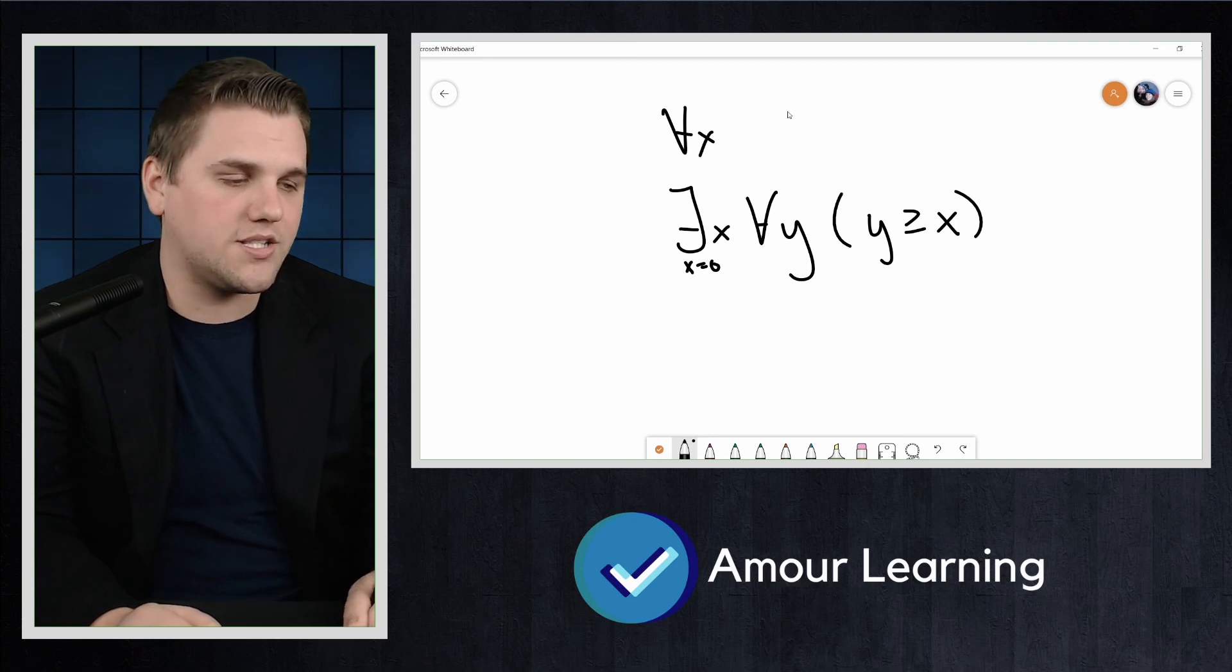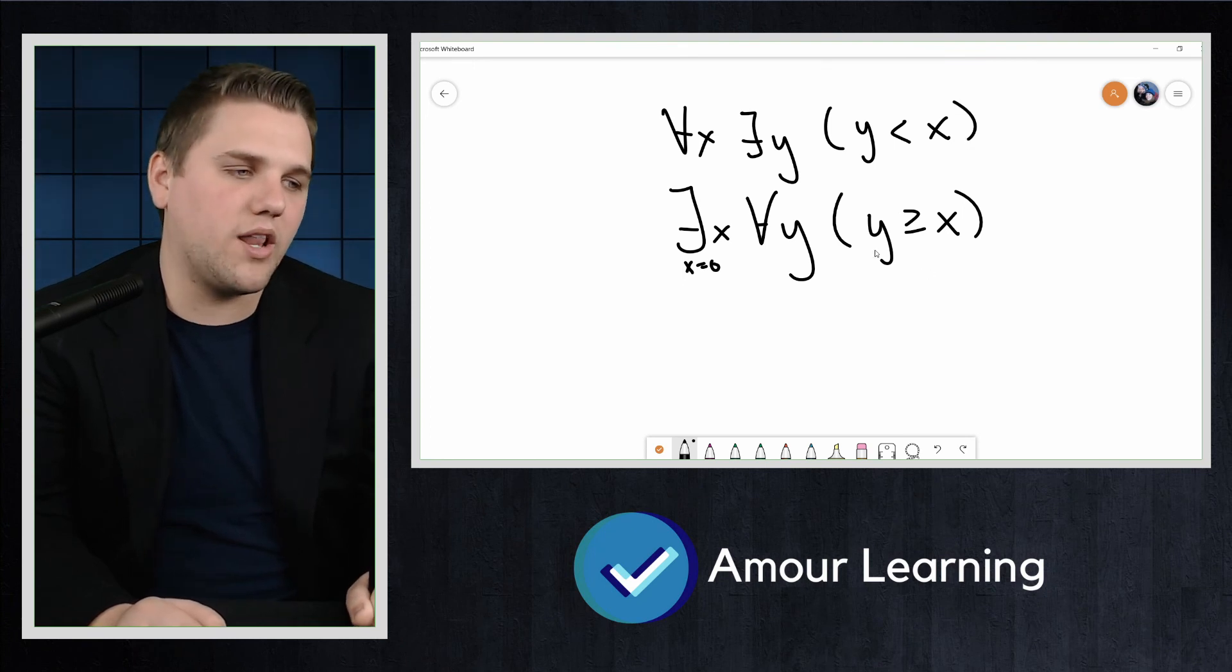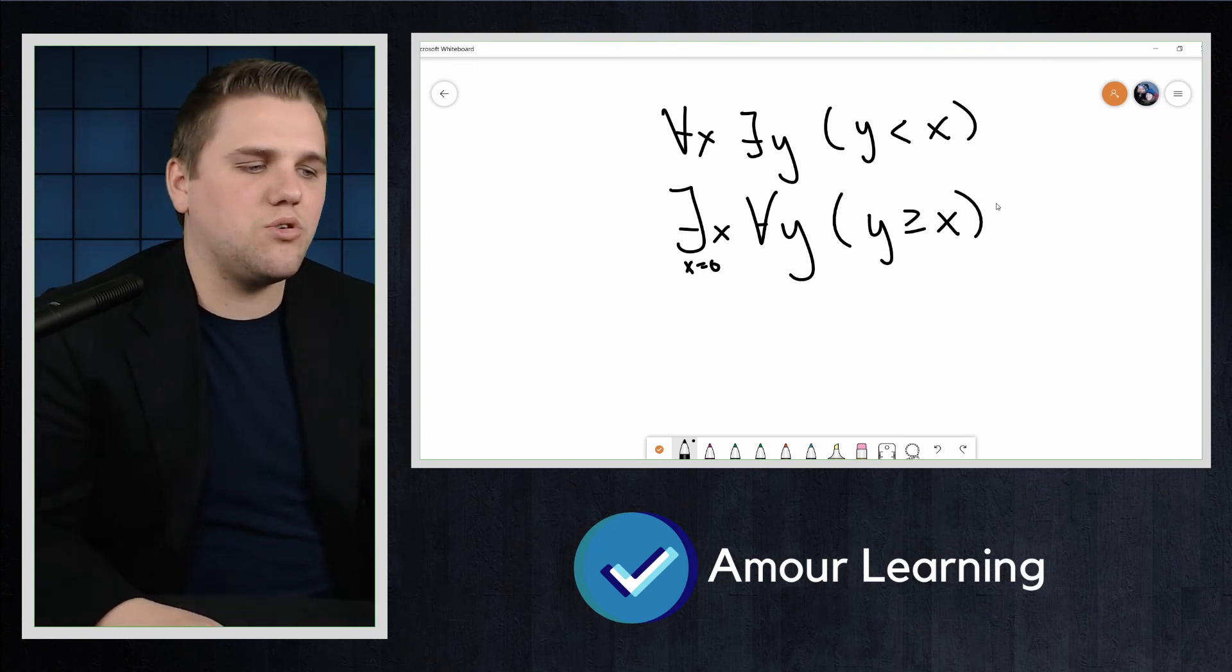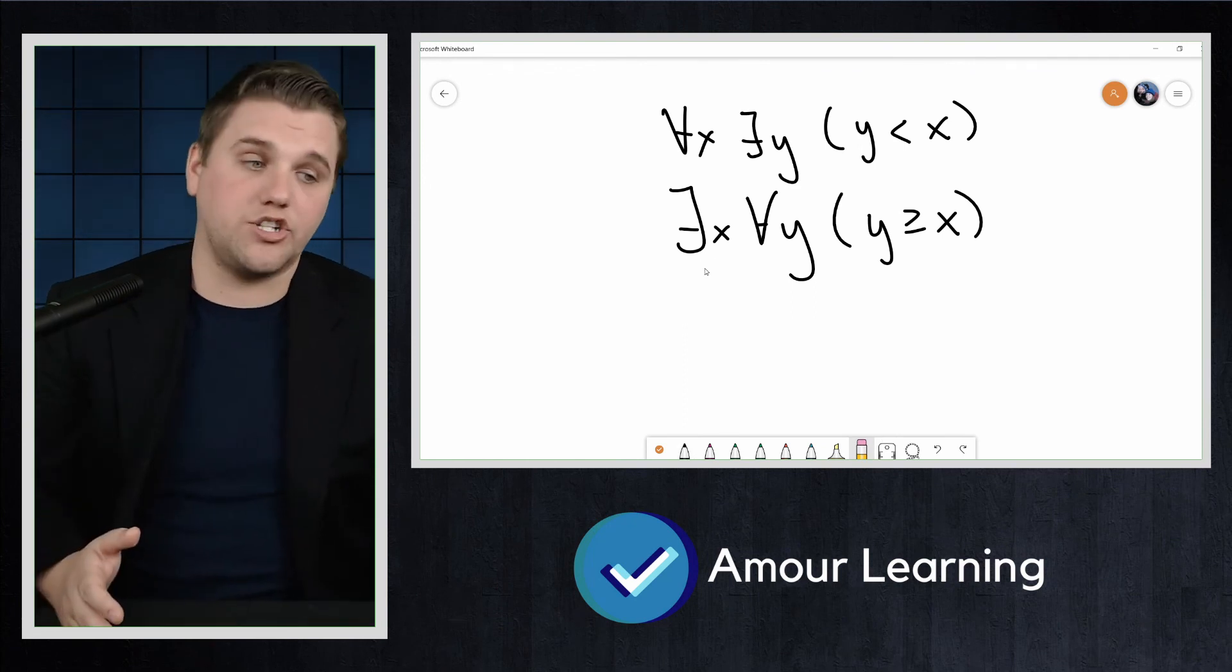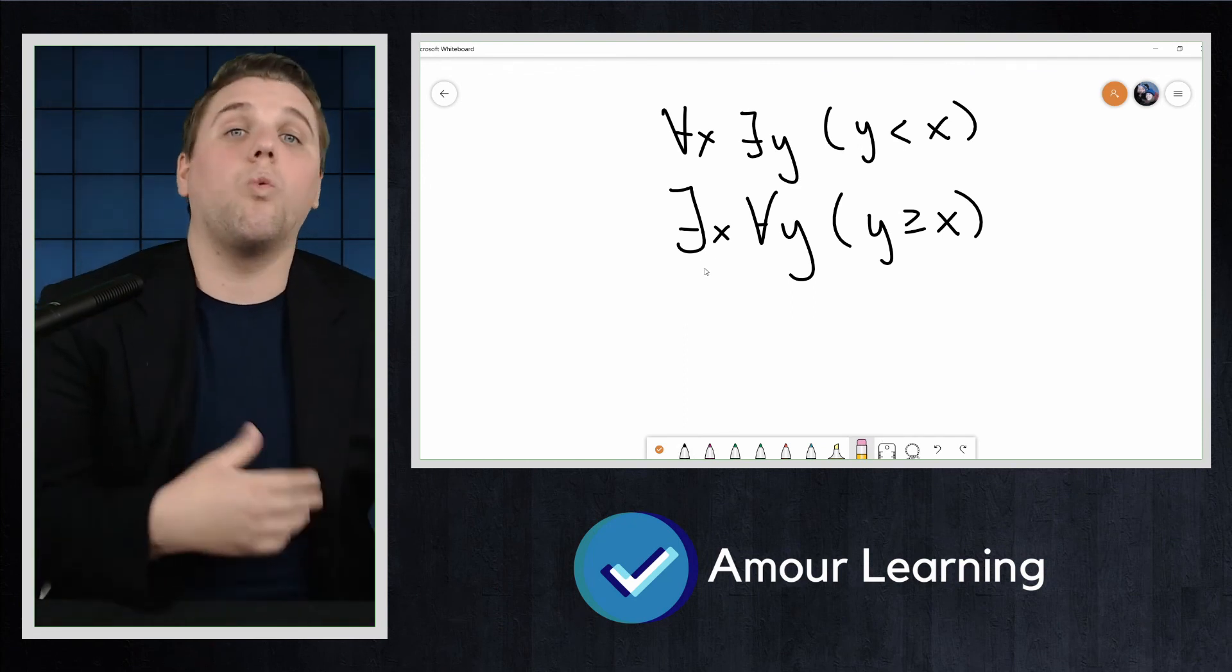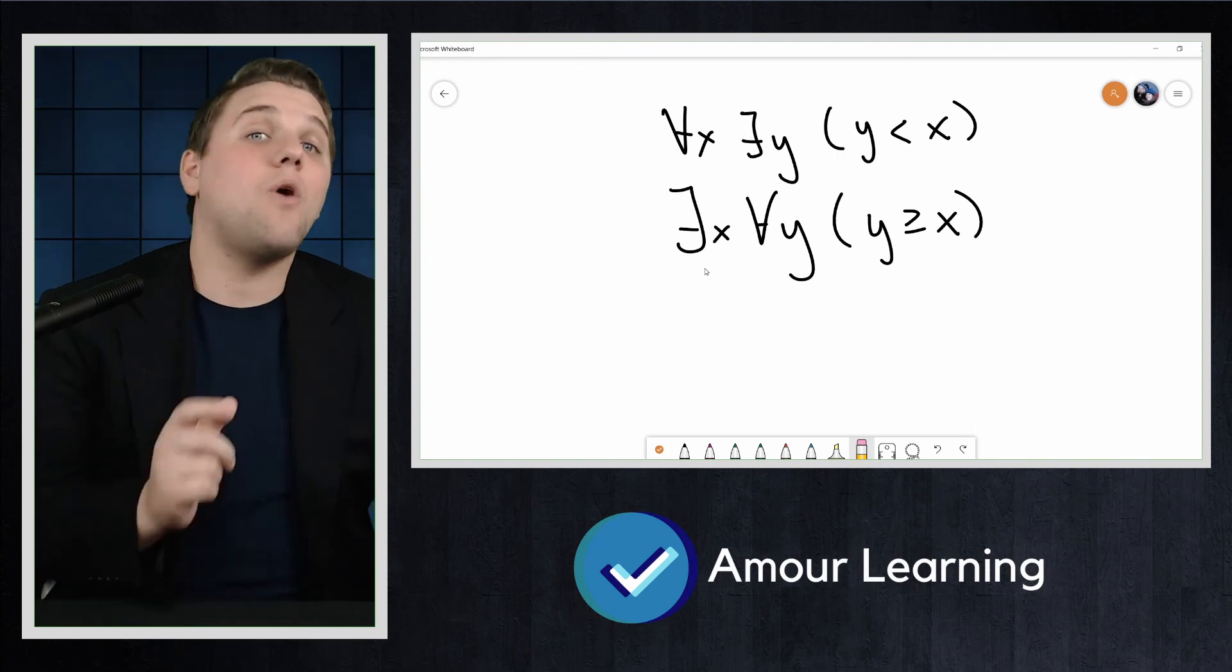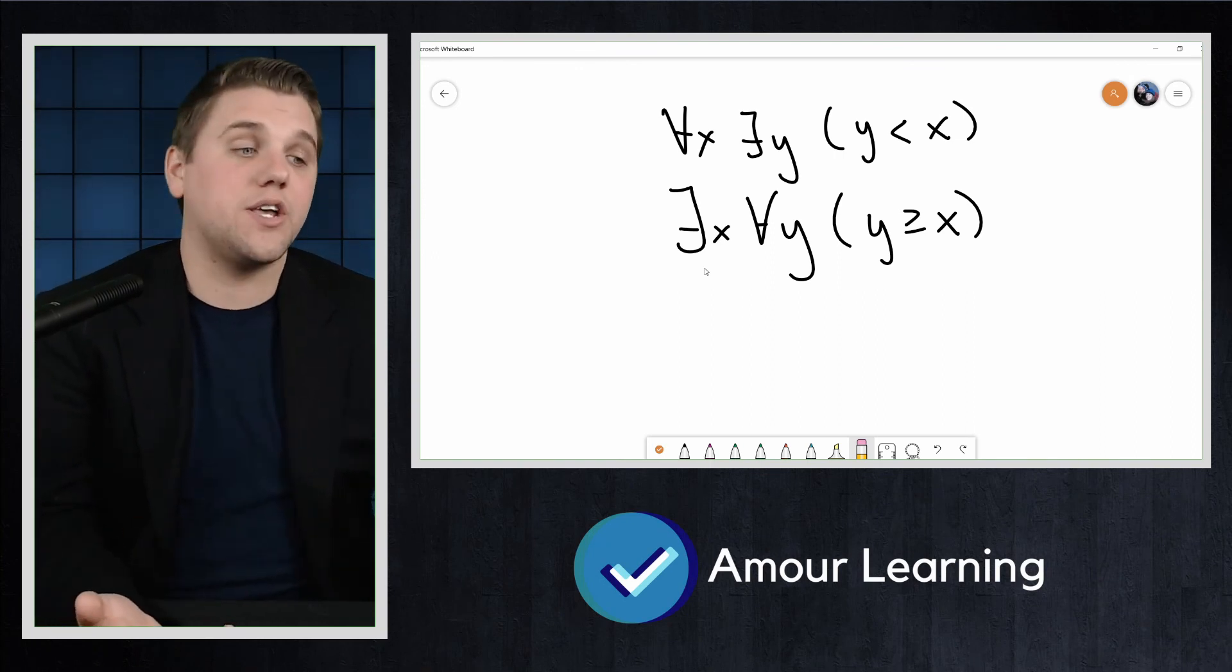For all X, there exists a Y such that Y is less than X. Now you'll see why I wrote it like this here. How do these two things compare? Well, they're negations of each other. In the next video, we'll discuss in more detail how negation and quantifiers play together.